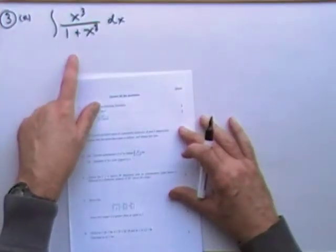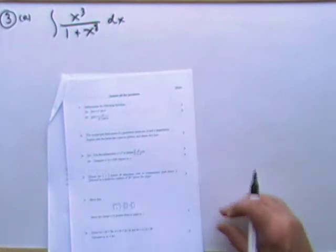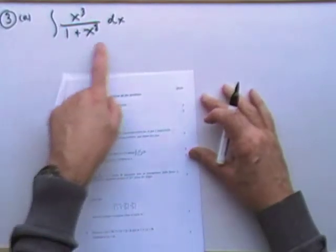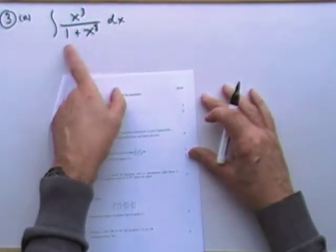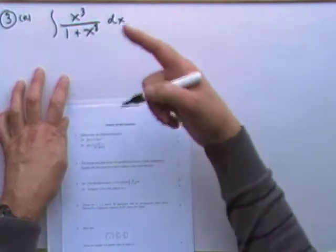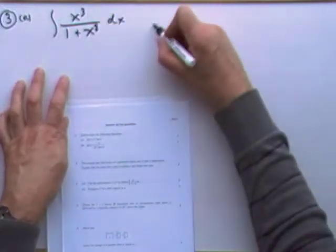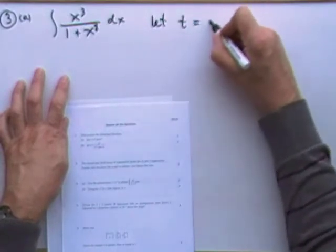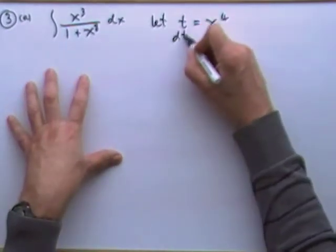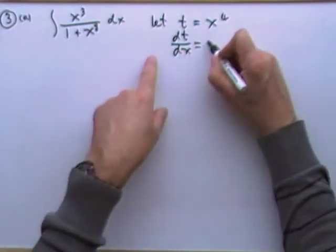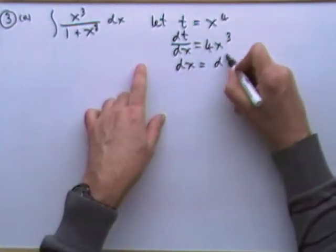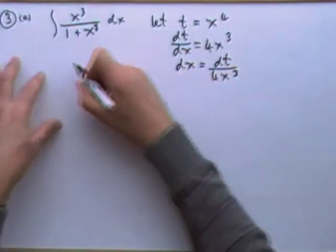Right, carry out this integration, but it tells you the substitution to use. You probably could have guessed it anyway. There's no point in using 1 plus x to the 8. That would be x squared to the power of 4, and 1 plus something squared by an inverse tan. So you probably could have guessed, let something equal x to the 4, so you'd have that thing squared. Plus x cubed is the derivative of x to the 4. Let t equal x to the 4 and proceed towards the answer.